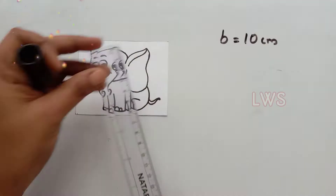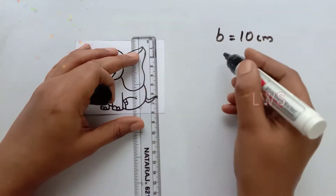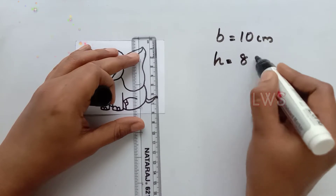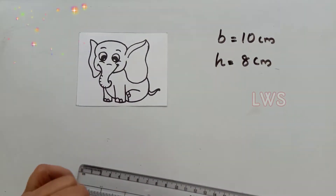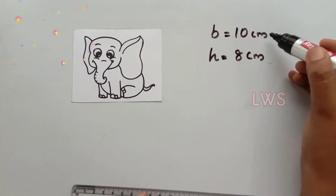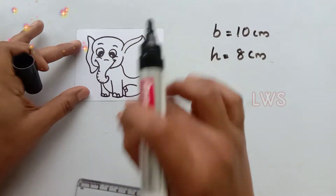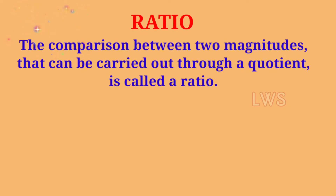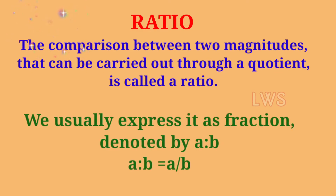First we measure the base and height of our original picture. The base is 10 cm and height is 8 cm. Now we have two lengths, base and height, so that we can compare them. The comparison between two magnitudes that can be carried out through a quotient is called a ratio. We usually express it as a fraction denoted by A is to B, which equals A divided by B.